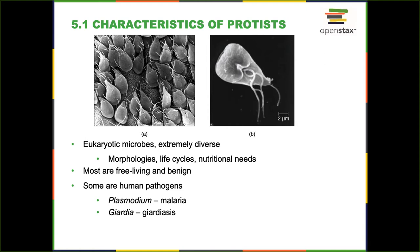Most protists are free-living and benign — they just do their thing, are part of the food cycle, eat bacteria for a living, and then get eaten by larger organisms. They're very important in the ecology. But of course some are human pathogens. Probably the most important protozoan human pathogen is Plasmodium, which causes malaria — an important worldwide disease. We don't think about it too much because we don't have incidents of malaria around here, but malaria is quite important worldwide. Giardia also causes intestinal issues, and there are many protozoan parasites we will talk about.